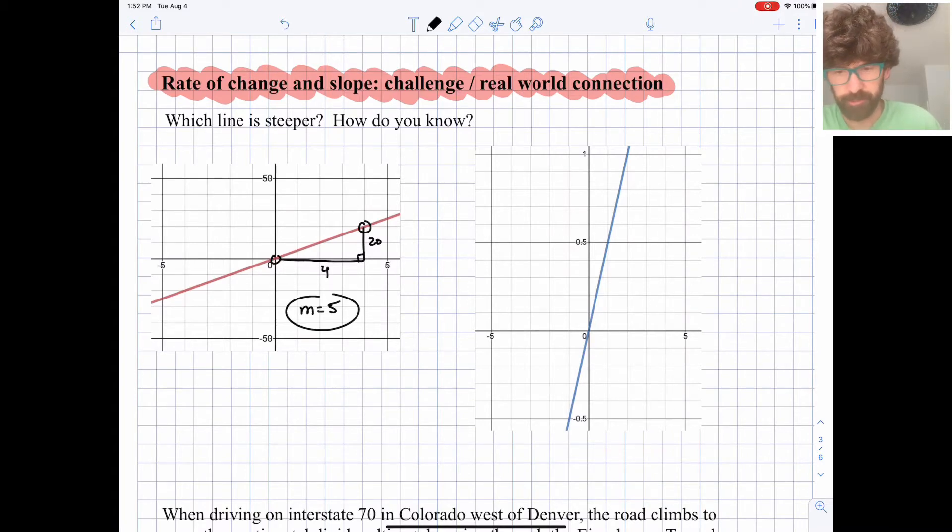Okay, same deal on this blue line, find some nice clean points. All right, so here it looks like we have a rise of 0.5 and a run of 1. So slope is going to be 0.5 over 1, which is just 0.5, which is a half.